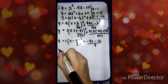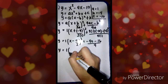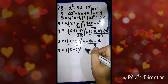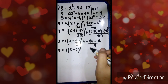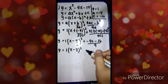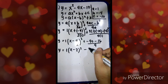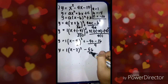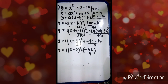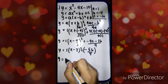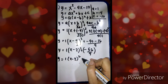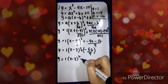Then y equals 1 times x — negative 4 divided by 2 is negative 2 — squared, and then 4 times 1 times negative 10 is negative 40, minus negative 4 squared which is 16, all over 4. So negative 40 minus 16 equals negative 56 over 4. Then y equals 1 times x minus 2 squared — positive multiplied by negative is negative.